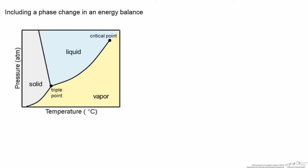In this screencast, I'll demonstrate how to calculate the enthalpy that occurs before, during, and after a phase change. Let's start by looking at a phase diagram — in particular that of water — and see what happens when we go from a liquid at 50 degrees C to a vapor at 150 degrees C at constant pressure, in this case one atmosphere.